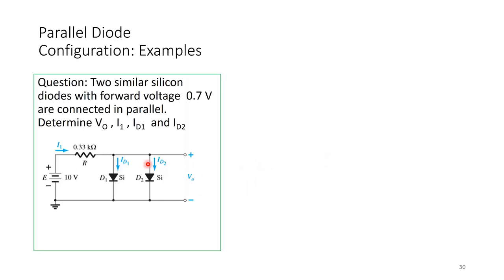This circuit has two similar silicon diodes, each with forward voltage 0.7 volts, connected in parallel. Determine Vout, I1 (current through 0.33 kilohm), ID1 (current through diode 1), and ID2 (current through diode 2).